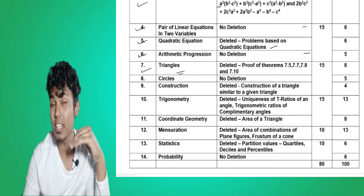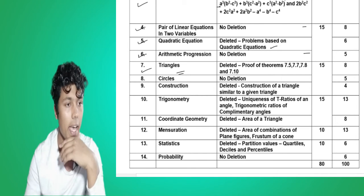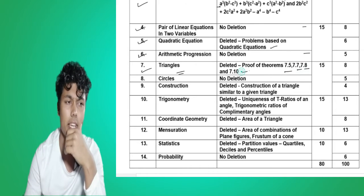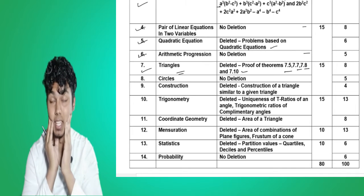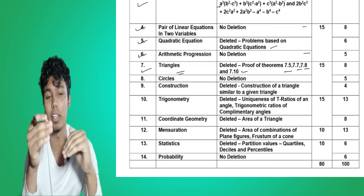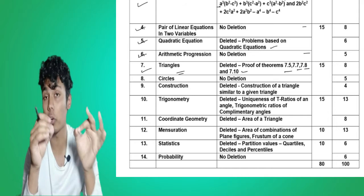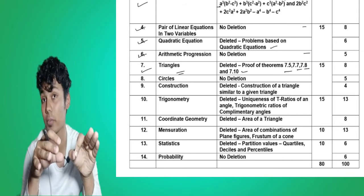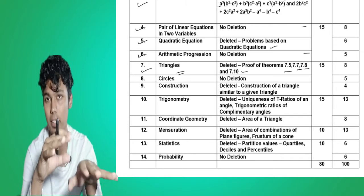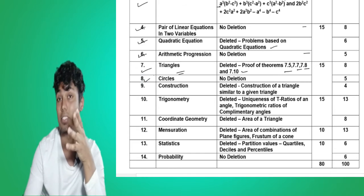Let us look forward. Chapter number seven is Triangles. From this chapter there are some theorems which are deleted — like Theorem 7.5, 7.7, 7.8, and 7.10. From this chapter they mostly used to ask theorems, and since they have deleted these theorems, we need to study fewer theorems. There are very good chances of asking questions from the remaining theorems, like the statement or proof of the theorem. We will discuss it in detail when we do the chapter.